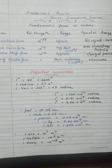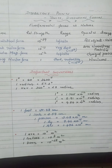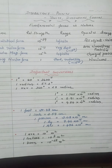Some important length conversions: one foot equals 0.3048 meter, one inch equals 2.54 centimeter. One parsec is the largest measuring unit of distance, equal to 3.08 × 10¹⁶ meter. One light year equals 9.46 × 10¹⁵ meter, and one astronomical unit equals 1.496 × 10¹¹ meter.